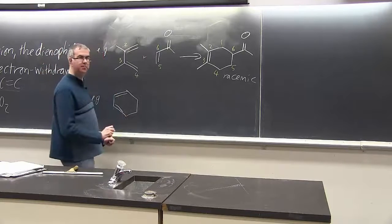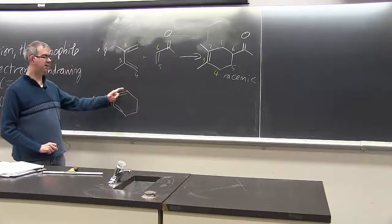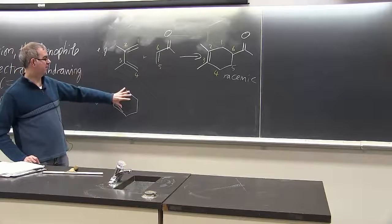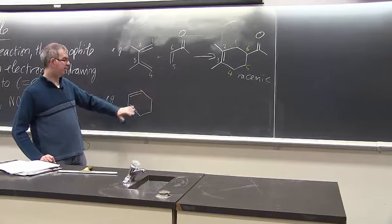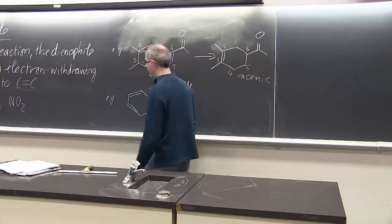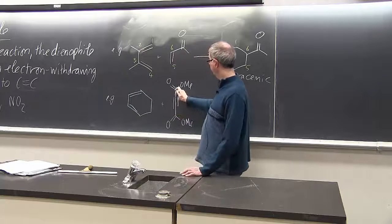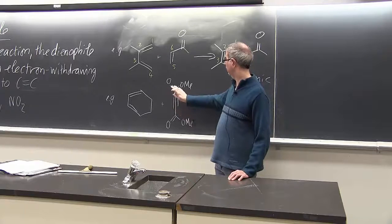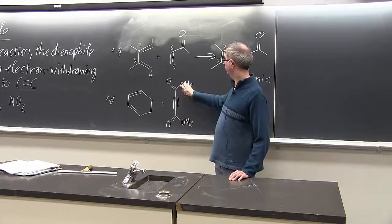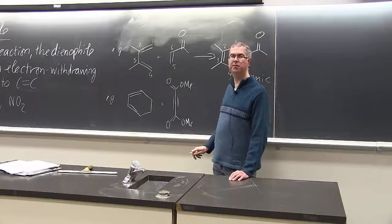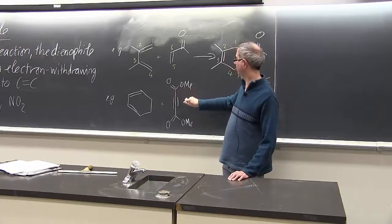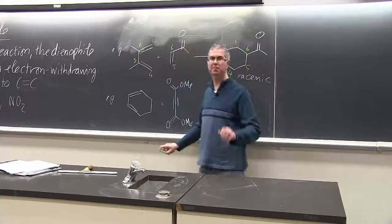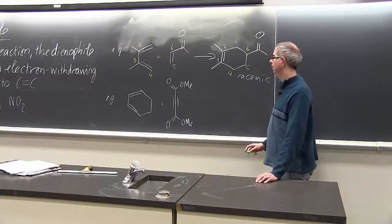So this is not benzene, it's cyclohexa-1,3-diene. This is a good dienophile because it's locked in the S-cis conformation and we're going to react it with this alkyne. This alkyne actually has two electron withdrawing groups. So this is actually sometimes called MAD, methyl acetylene dicarboxylate, because it's a really MAD reactive dienophile.